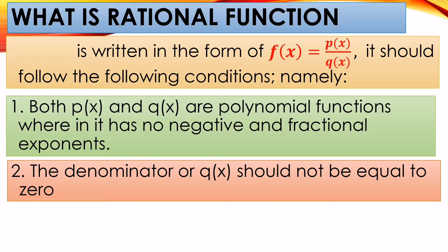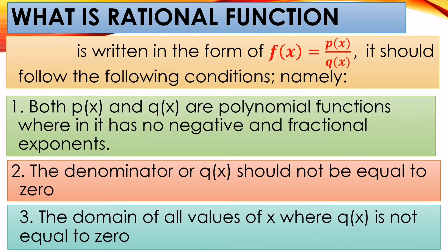Number two, the denominator or q(x) should not be equal to zero. If the denominator becomes zero, it will become undefined — we cannot identify the exact value because the denominator is zero. And the domain is all values of x where q(x) is not equal to zero, meaning all possible values of x as long as they don't make the denominator zero.